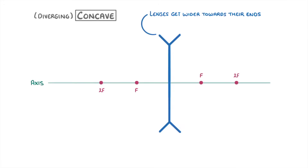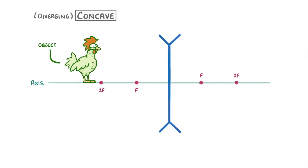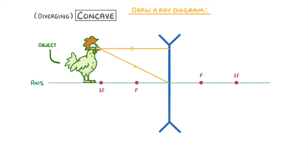In your exams, you'll normally be given all of this stuff, so you probably won't have to draw it yourself. So let's imagine that this chicken is our object, and that we need to draw a ray diagram to show where the image will form. The first thing we do is pick a point near the top of our object and draw our incident rays coming out of the object at that point — one running parallel to the axis, and another one going towards the centre of the lens.